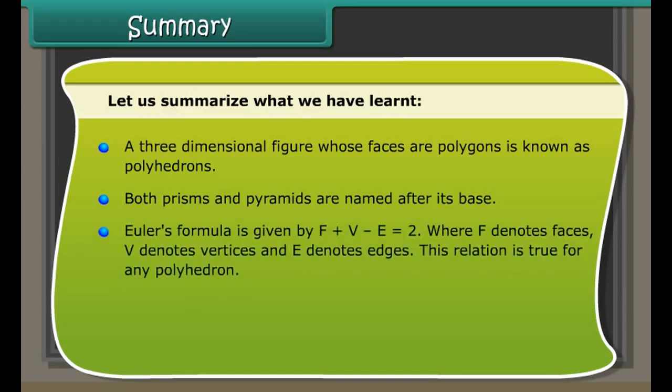Summary: two-dimensional shapes are measured by length and breadth. Three-dimensional shapes are measured by length, breadth, and height or depth. 3D objects have different views from different positions. The line segment along which two faces intersect is an edge. Points at which three or more faces meet are called vertices. A three-dimensional figure whose faces are polygons is known as a polyhedron. Both prisms and pyramids are named after their bases. Euler's formula is given by F + V − E = 2, where F denotes faces, V denotes vertices, and E denotes edges. This relation is true for any polyhedron.